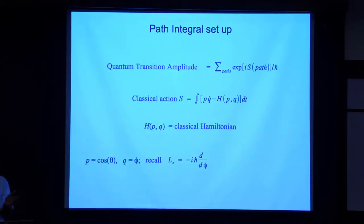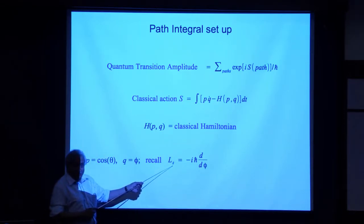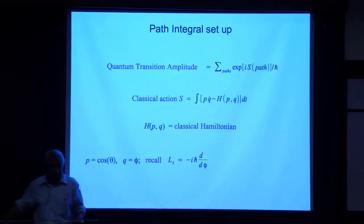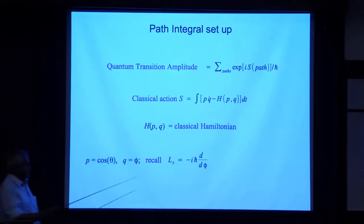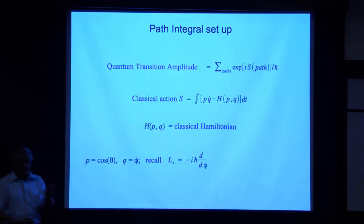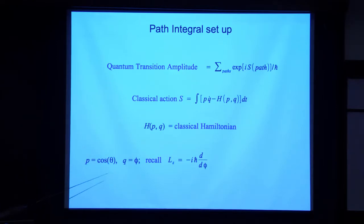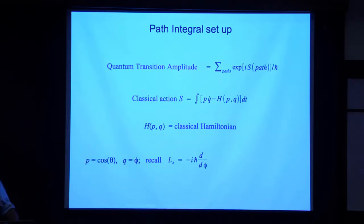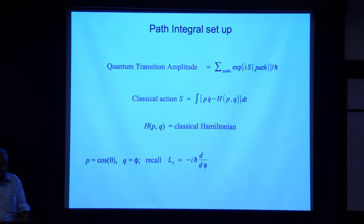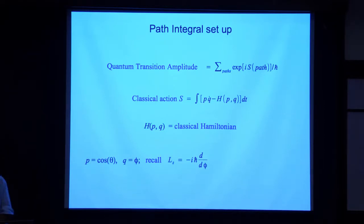The spin lives on the surface of a sphere. I can take the position as the azimuthal angle phi around the sphere. Remembering elementary quantum mechanics, the z-component of the angular momentum operator has the representation minus i h-bar d/d-phi. So L_z becomes cosine theta — that's my P. My Q is phi. These are my P and Q variables related to theta and phi, which are the variables I use to define the configuration of my spin. The phase space for this system is the surface of the sphere.